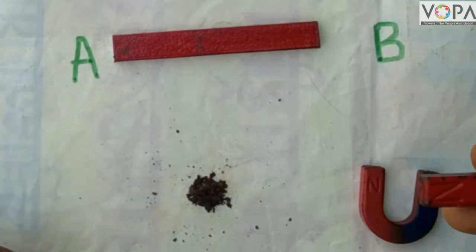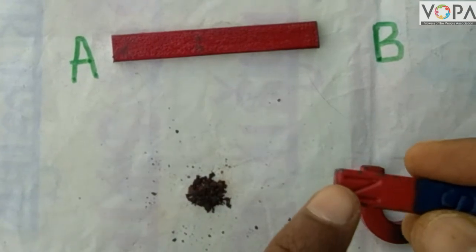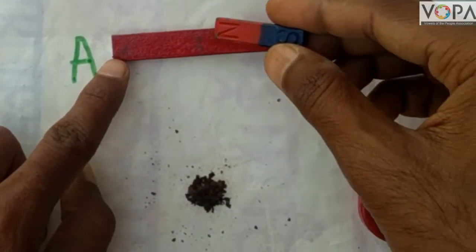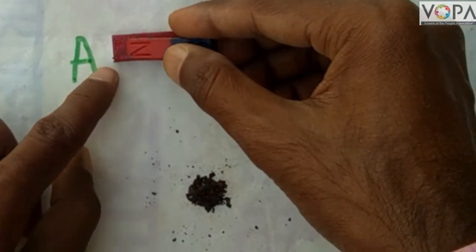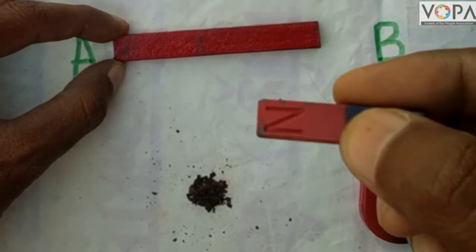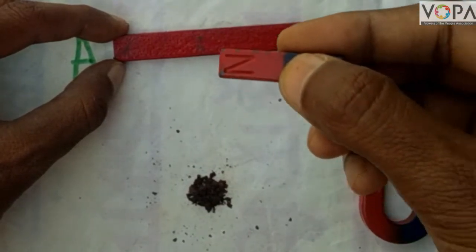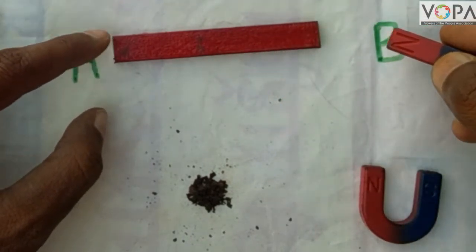Take a bar magnet, place the north pole of a bar magnet at the A end of the steel bar and drag it towards the B end. In this way we have to drag this north pole of a bar magnet from the A end towards the B end.